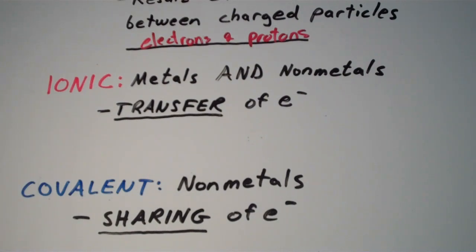So let's start with ionic bonds. Ionic bonds involve the transfer of electrons. So recall that we have two different types of ions. We have cations, which are positively charged ions, and anions, which are negatively charged ions.